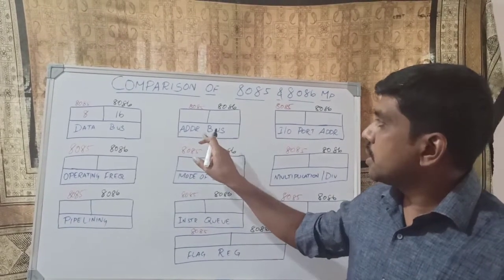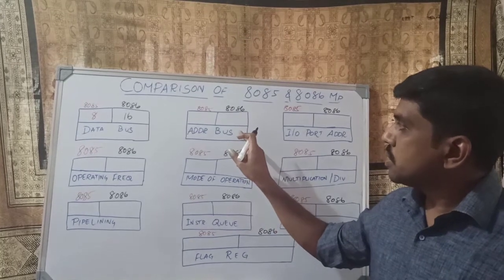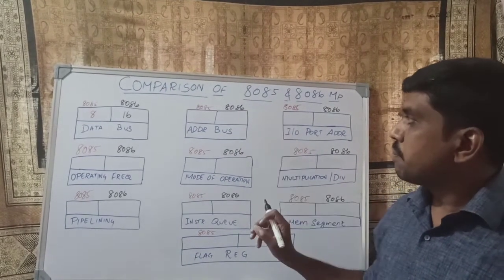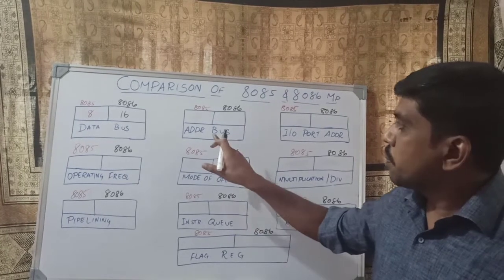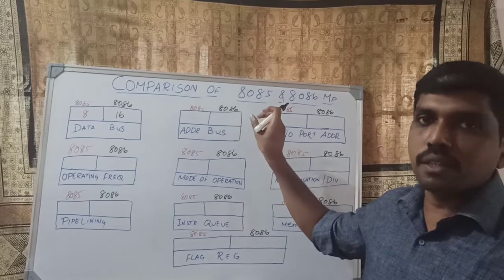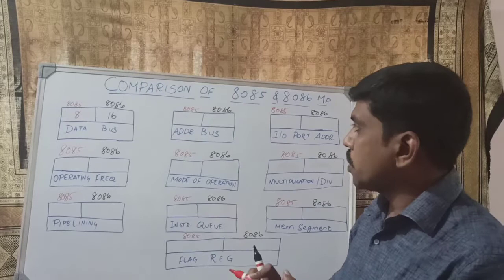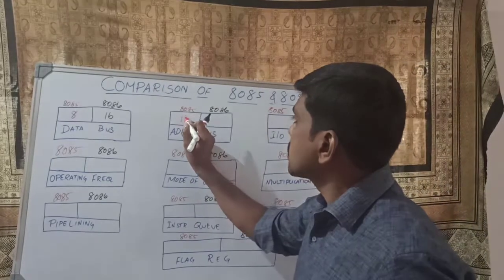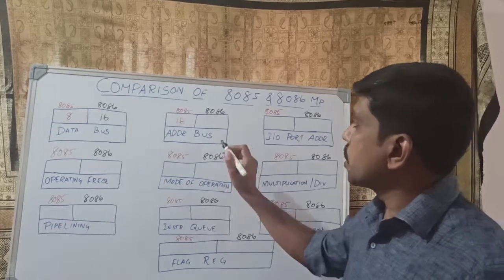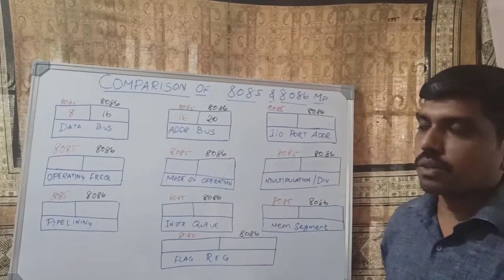The next parameter is address bus. The address bus is used for getting instructions from the program memory — you pass the address location, and whatever instruction is specified there, you fetch and execute it. In the 8085 microprocessor, it carries 16-bit address locations. In the 8086 microprocessor, it carries 20-bit address locations.